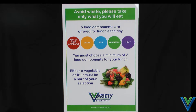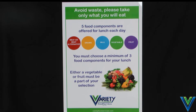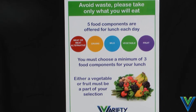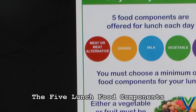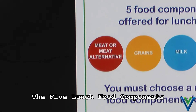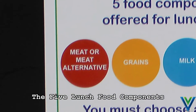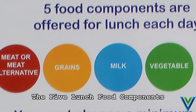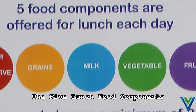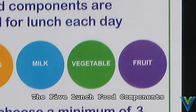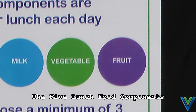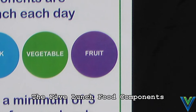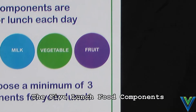Offer vs. Serve allows students to choose from five different food components for their lunch each day. A minimum of three components must be taken in order to constitute a reimbursable meal, and one of these components must be a fruit or a vegetable. The goals of Offer vs. Serve are to minimize plate waste and to encourage schools to offer more food choices to students.